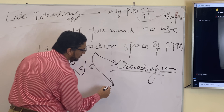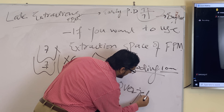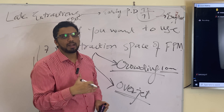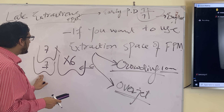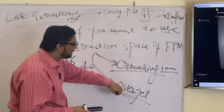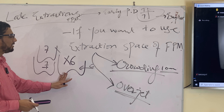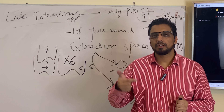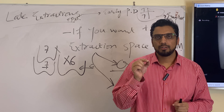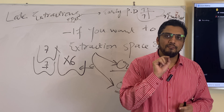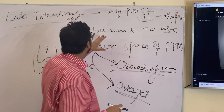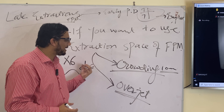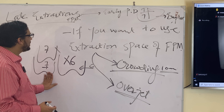Similarly, if you want the space of the sixth for correction of overjet, you do not extract the sixth early as a GDP. You wait for the eruption of the seventh, then extract the sixth and use that space for overjet correction. To summarize: if third molars and fifths are present, root at bifurcation level, 15-30° angulation, slight overlap — extract early. If you need the space for crowding or overjet correction, do not extract.